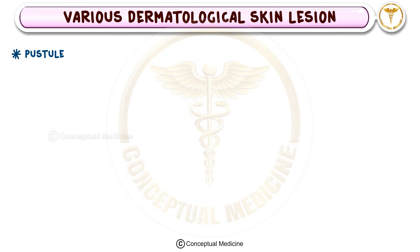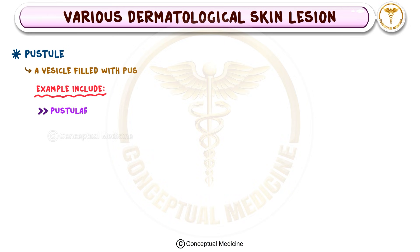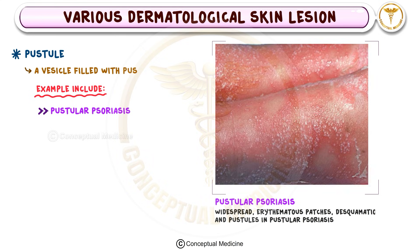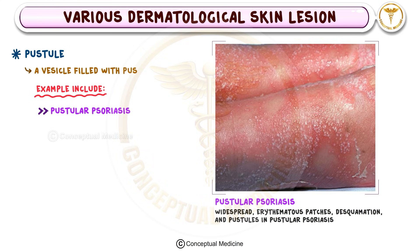Next, we have the pustule, a vesicle filled with pus, often indicating infection or inflammation. Pustules are seen in conditions like pustular psoriasis, which presents with painful, sterile pustules on an inflamed base.